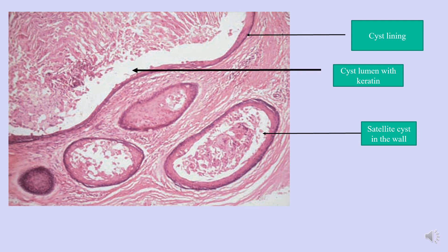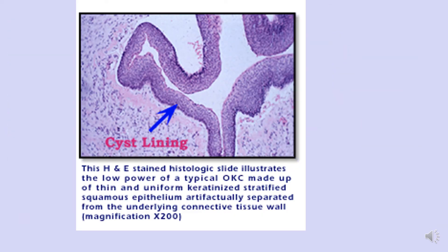There are three important reasons why OKC is aggressive: first, the weak epithelial-connective tissue junction makes complete removal difficult, leaving behind remnants that give rise to new cysts; second, the presence of daughter cysts in the cyst wall; and third, the inherently aggressive character of this cyst. A histological slide also demonstrates the epithelium ripped apart from the cyst wall, which is very typical of OKC.